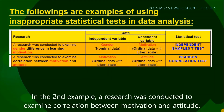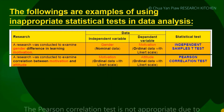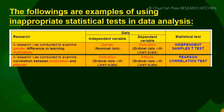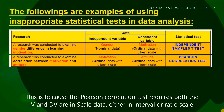In the second example, a research was conducted to examine the correlation between motivation and attitude. The Pearson correlation test is not appropriate because both the IV and DV are ordinal data with a Likert scale. The Pearson correlation test requires both the IV and DV to be scale data, either in interval or ratio scale.